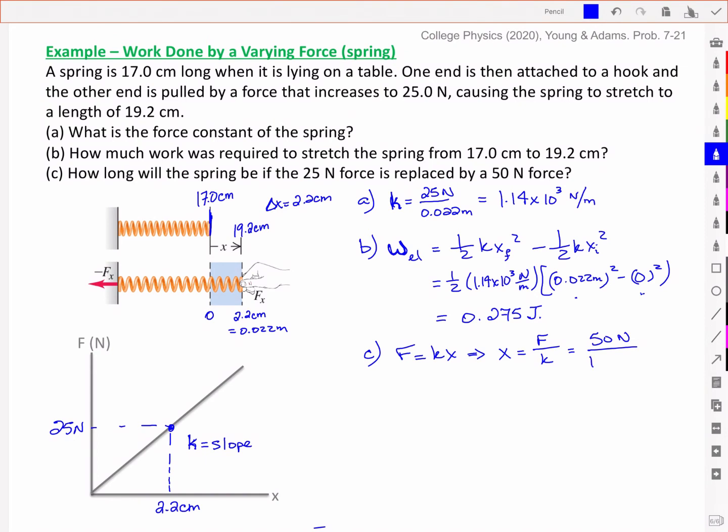And my spring constant is 1.14 times 10 to the 3 newtons per meter. And so now I've doubled the force and I get double the displacement. But I want to take that one step further. So you'll notice I doubled the force and therefore I got double the displacement. So taking it from 25 newtons to 50 newtons took the position from 2.2 cm up to 4.4 cm.